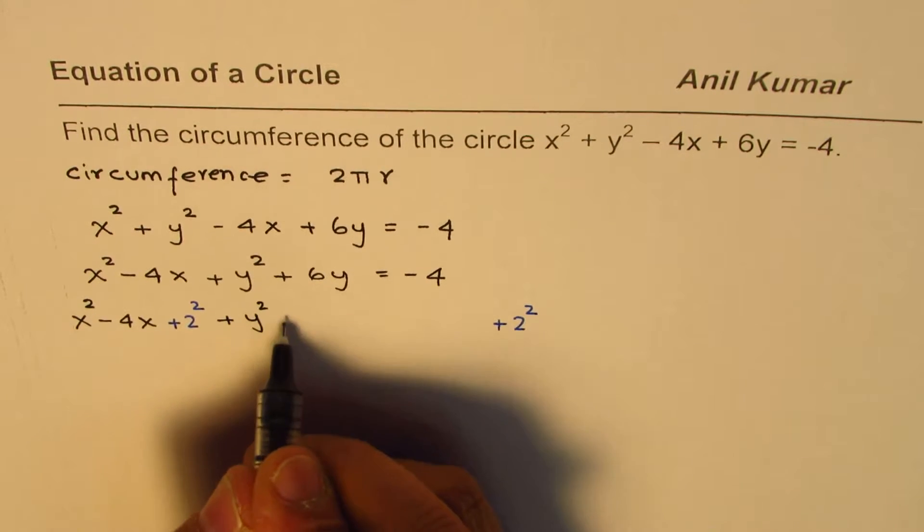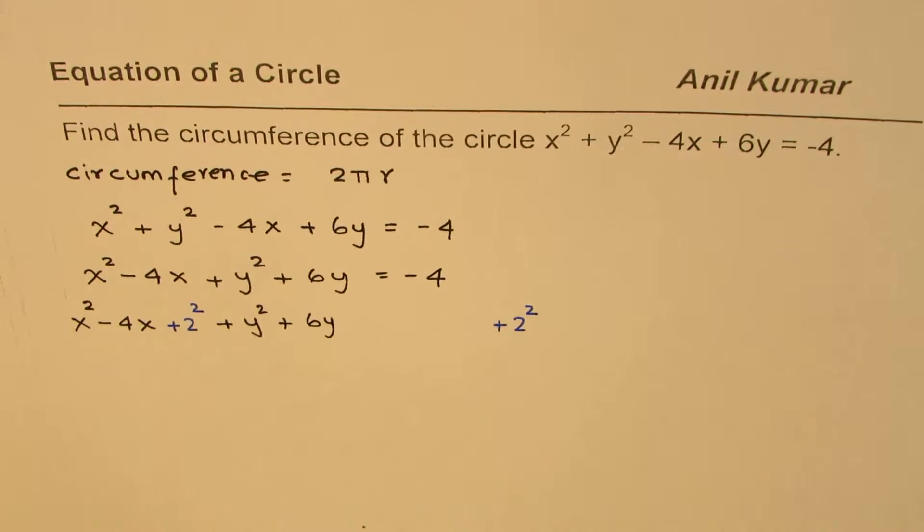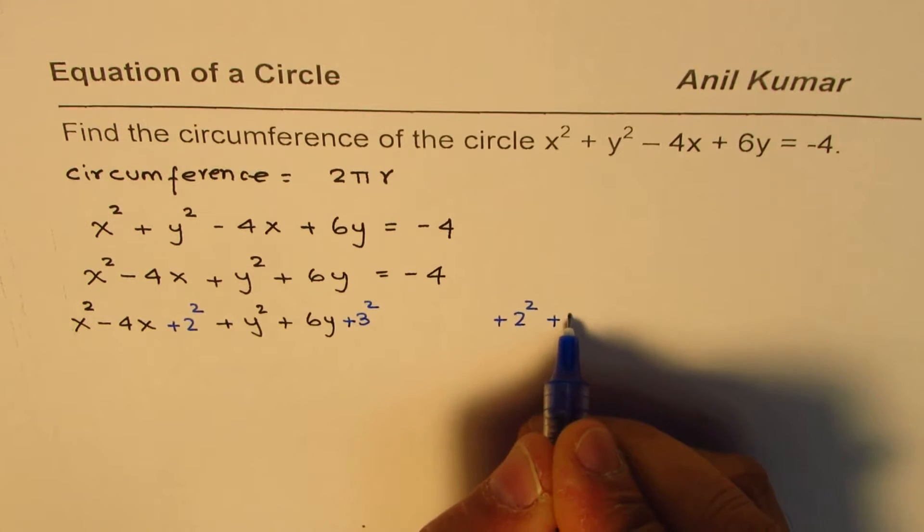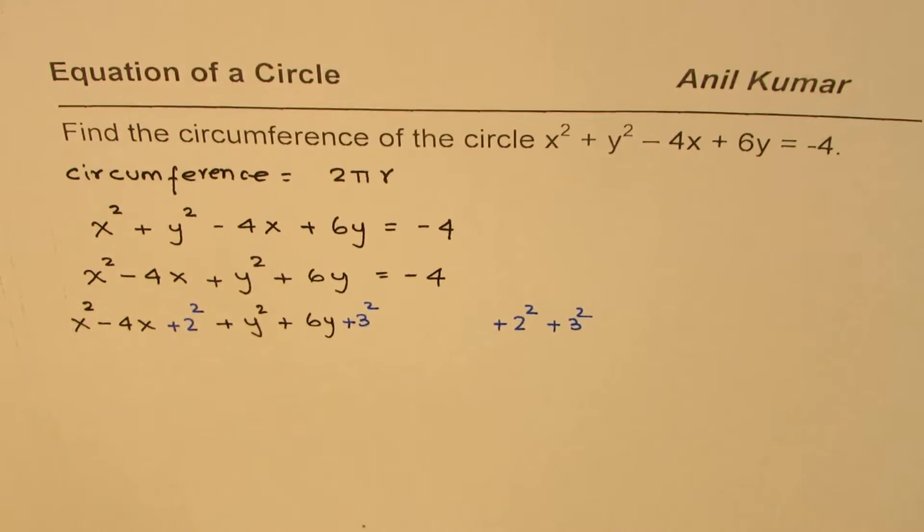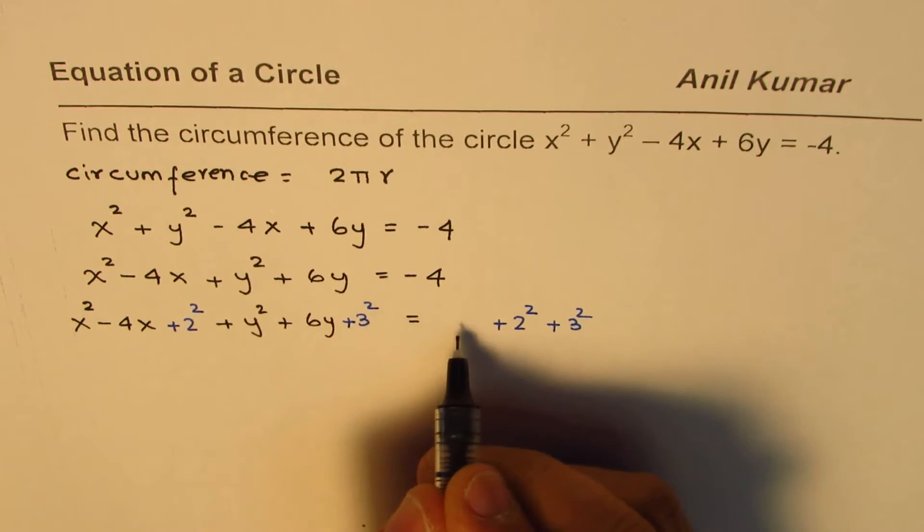For the y we have y square plus 6y. Half of 6 is 3 so we'll add 3 square on both sides. In an equation if you add same number on both sides, equation remains the same.